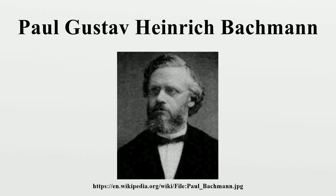Paul Gustav Heinrich Bachmann was a German mathematician. Bachmann studied mathematics at the University of his native city of Berlin and received his doctorate in 1862 for his thesis on group theory. He then went to Breslau to study for his habilitation, which he received in 1864 for his thesis on complex units.